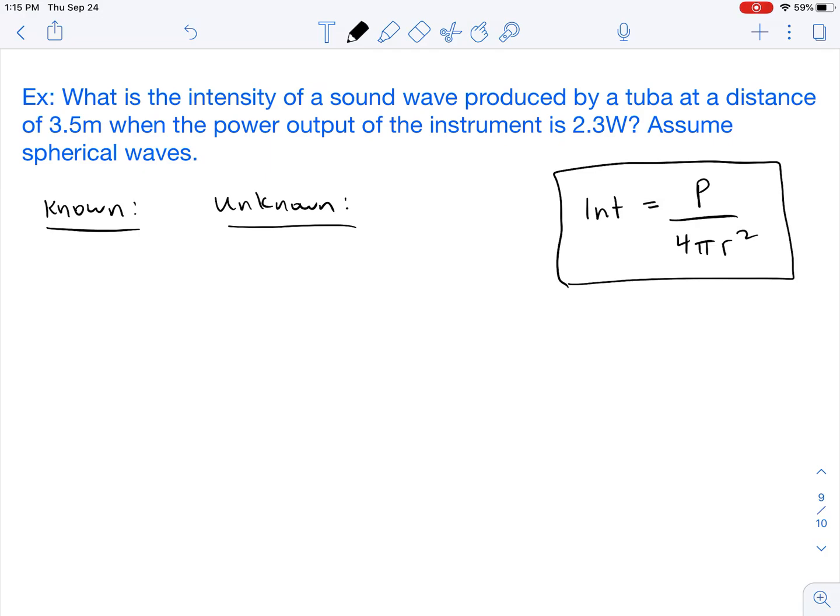What is the intensity of a sound wave produced by a tuba at a distance of 3.5 meters when the power output of the instrument is 2.3 watts? Assume spherical waves.